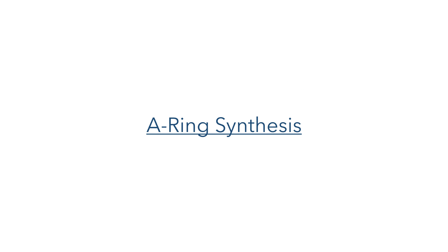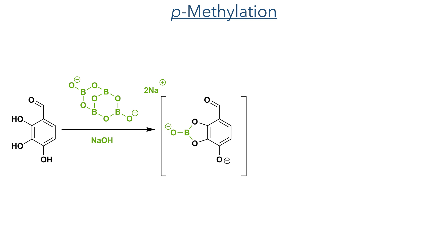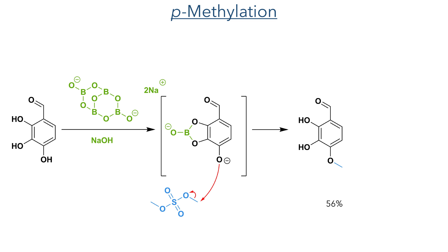So let's start with the synthesis of the A ring. In order to selectively react the hydroxyl group adjacent to the aldehyde, they first react the molecule with a mixture of borax and sodium hydroxide, which forms a borate that transiently protects the 2 and 3 hydroxyl groups. This leaves the 4-hydroxy group free to react with dimethyl sulfate, producing the 4-methoxy ether in 56% yield. This was then reacted with dibromomethane to install the methylene group between the 2 and 3 hydroxyl groups.